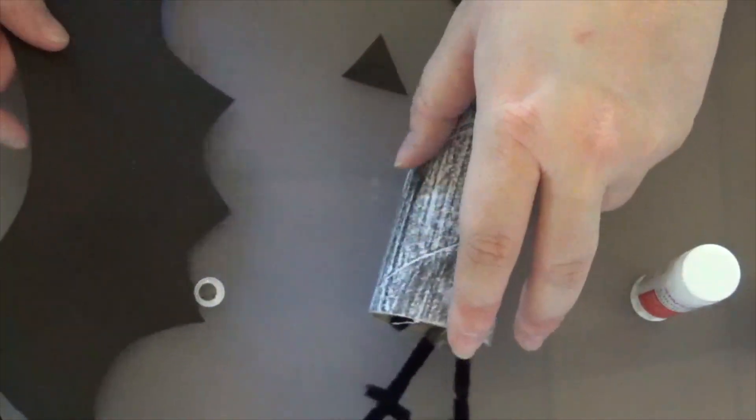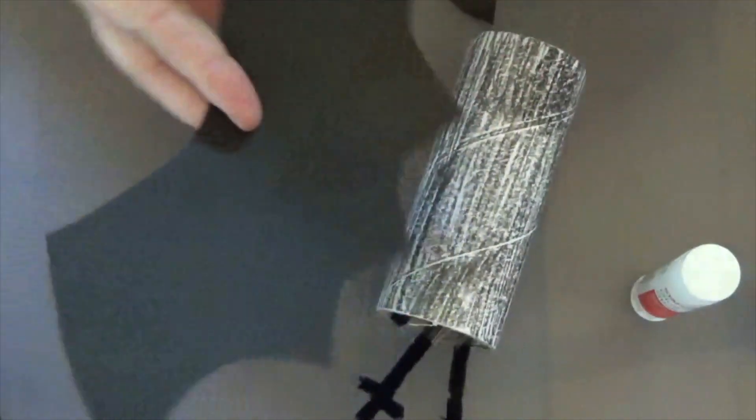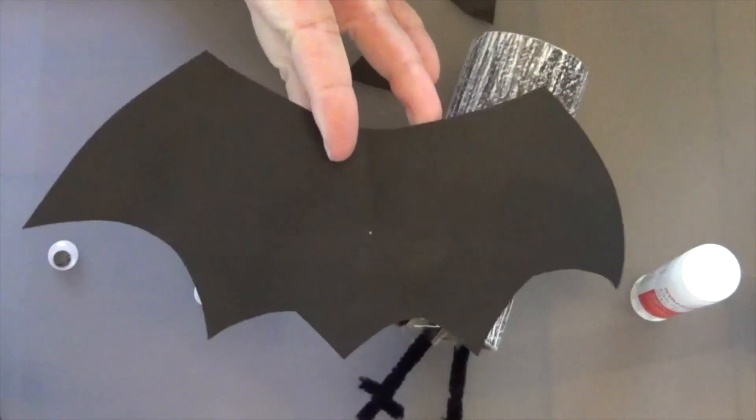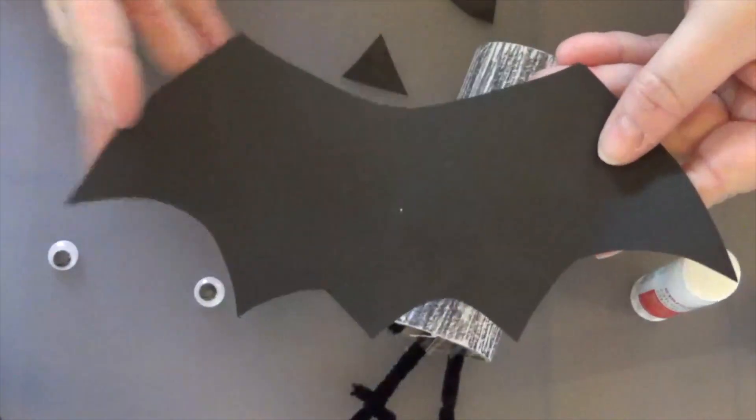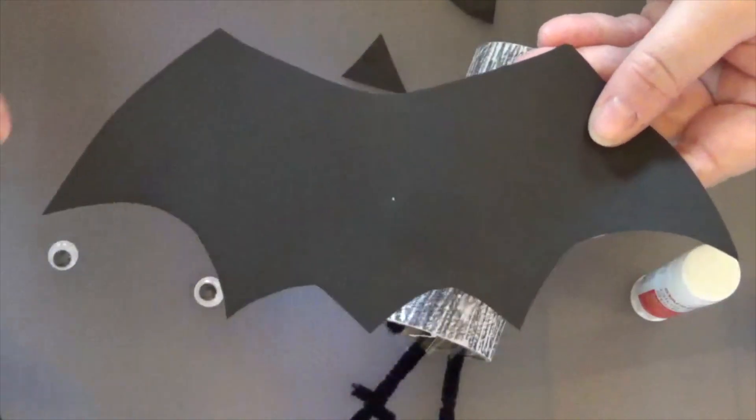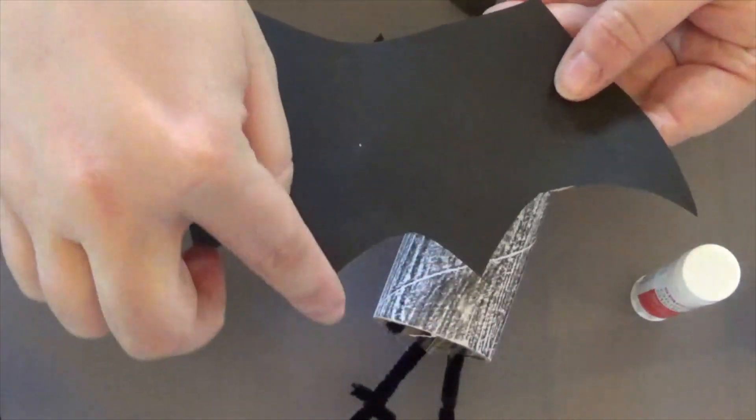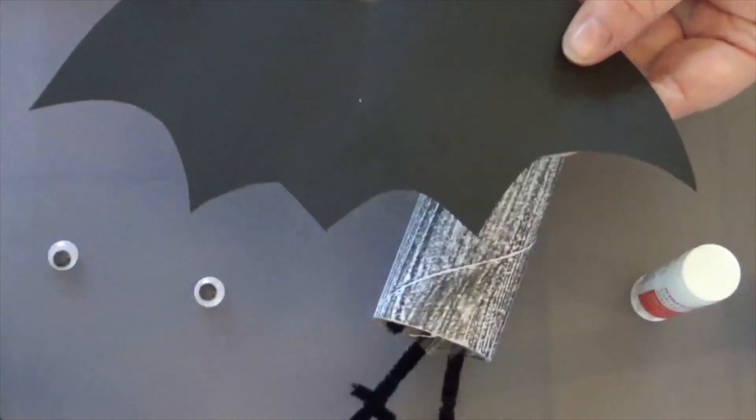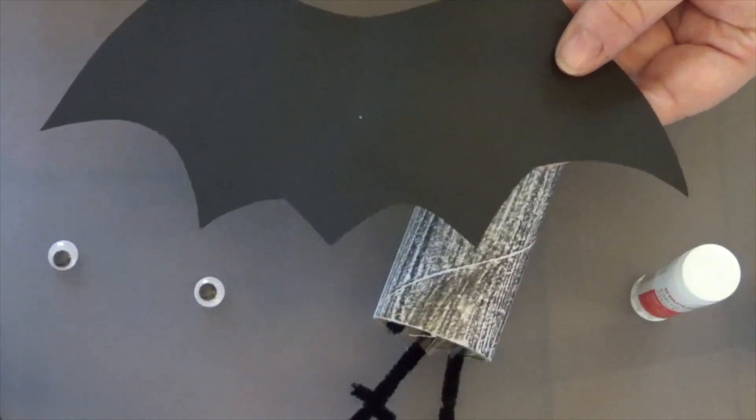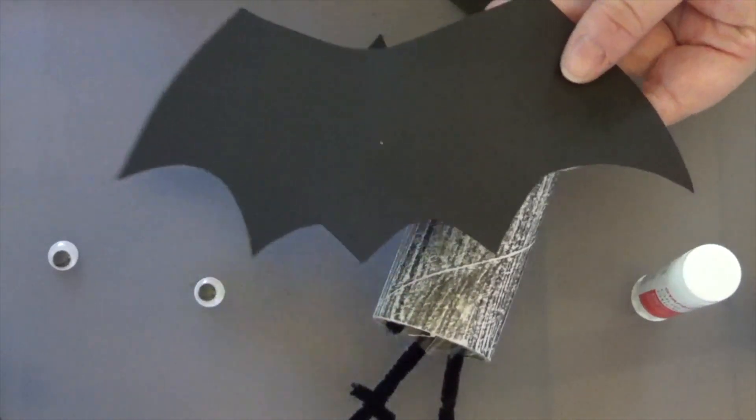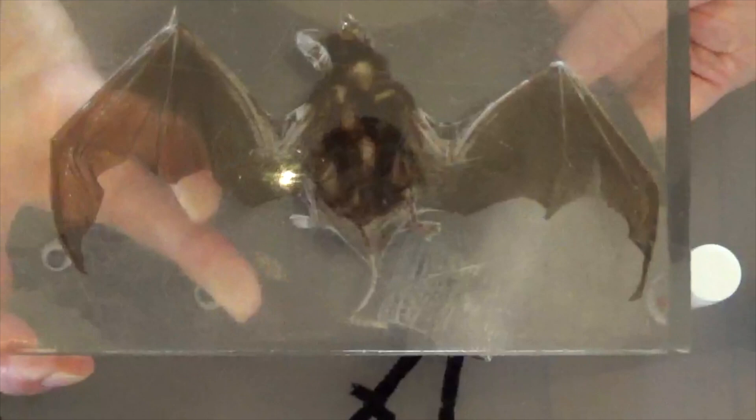Now I'm going to take my colored paper and I'm going to cut out my wings. Now they don't have to look just like this, but I made them to where there's like a little swoop here. And then I have all of these that show essentially like the finger bones or the finger bones on our bat.